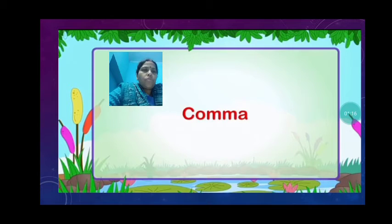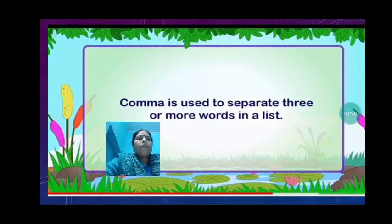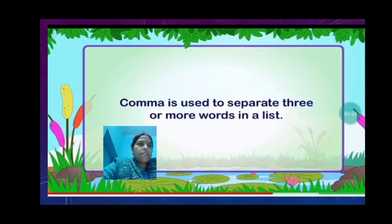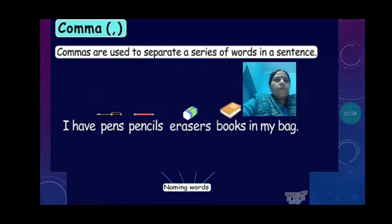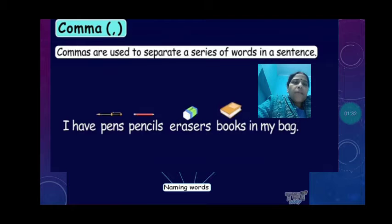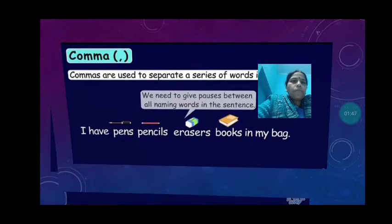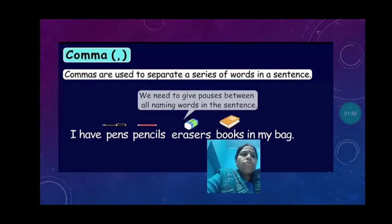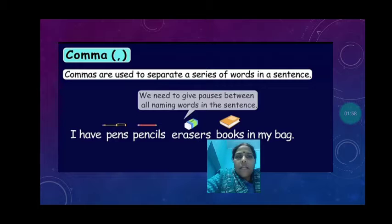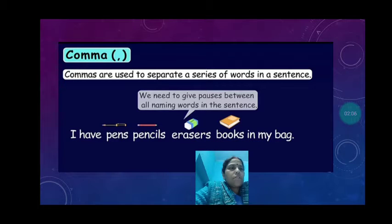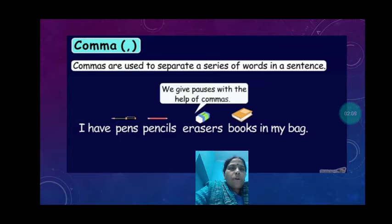Today we will read about the comma and when it is used. A comma is used to separate three or more words in a list. For example: pens, pencils, erasers, books in my bag. These are naming words — names of things. We need to give pauses between all naming words in the sentence, and we give those pauses with the help of commas.